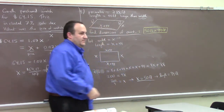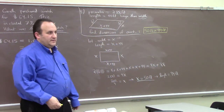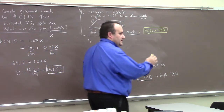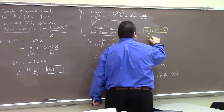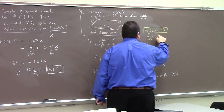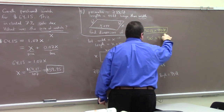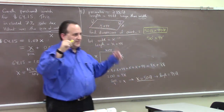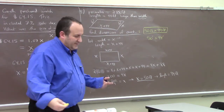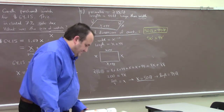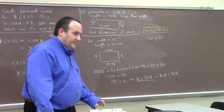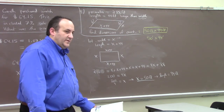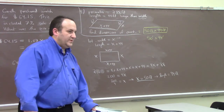So the dimensions of the court are 50 feet by 94 feet — you can write that with the foot symbol. Next time we'll start in section 1.4 unless you have questions about homework, which are always welcome.